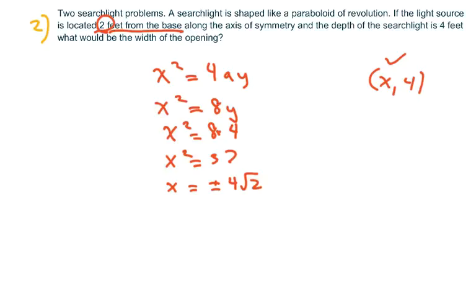And since we want to know what the width is, we're only going to take the positive. So this is going to be, oh this is actually 8, this is square root of 16 times 2. So basically, we're just going to take the positive and this is approximately 11.31 feet. And that is the width of the opening of the searchlight. Thank you and have a nice day. Bye-bye.